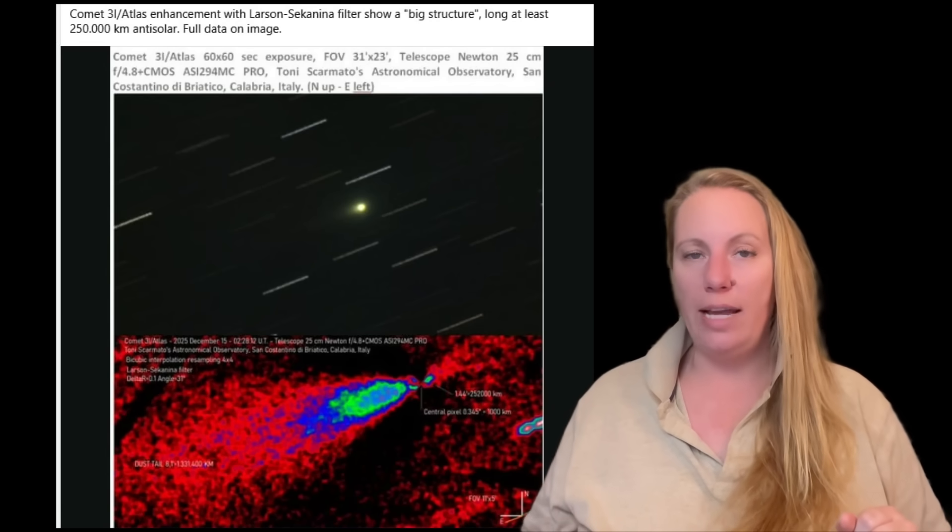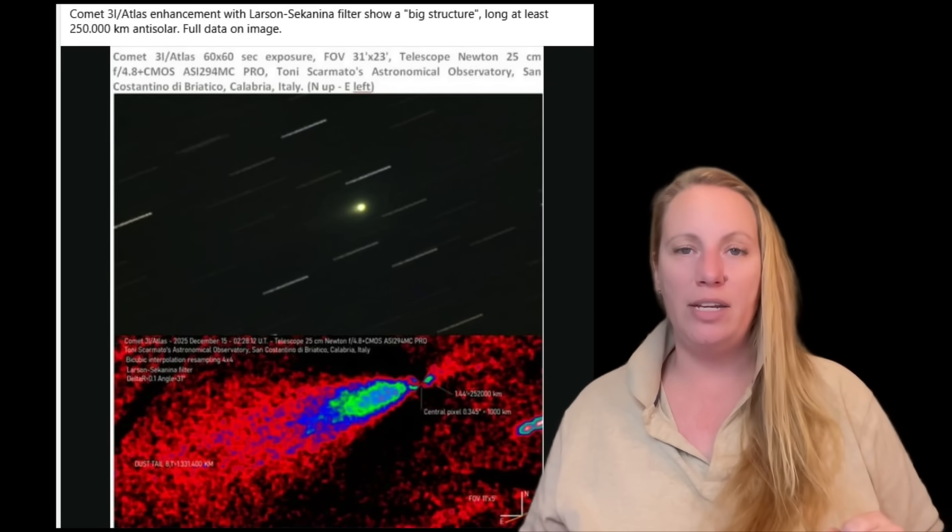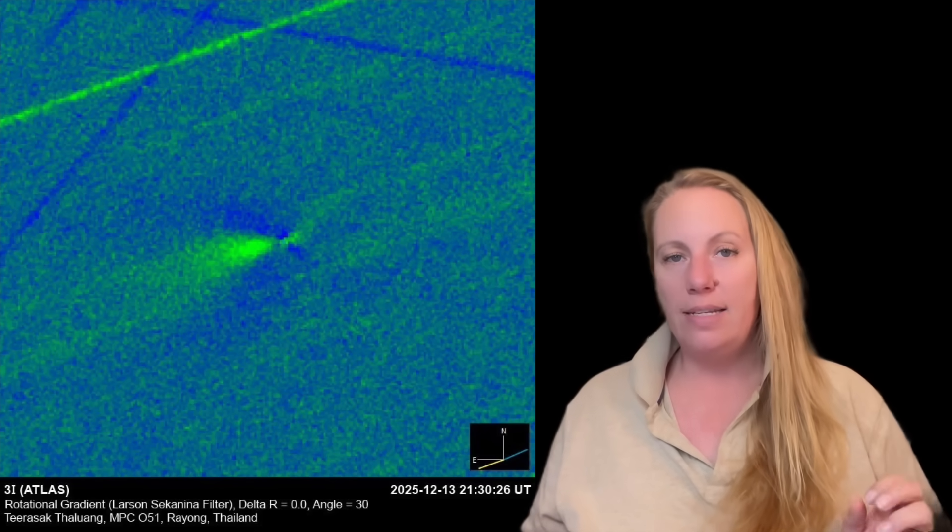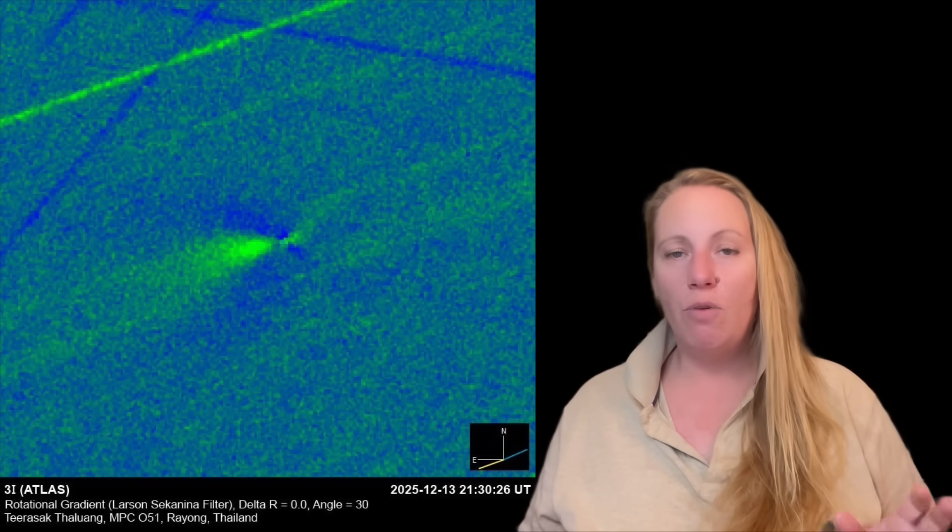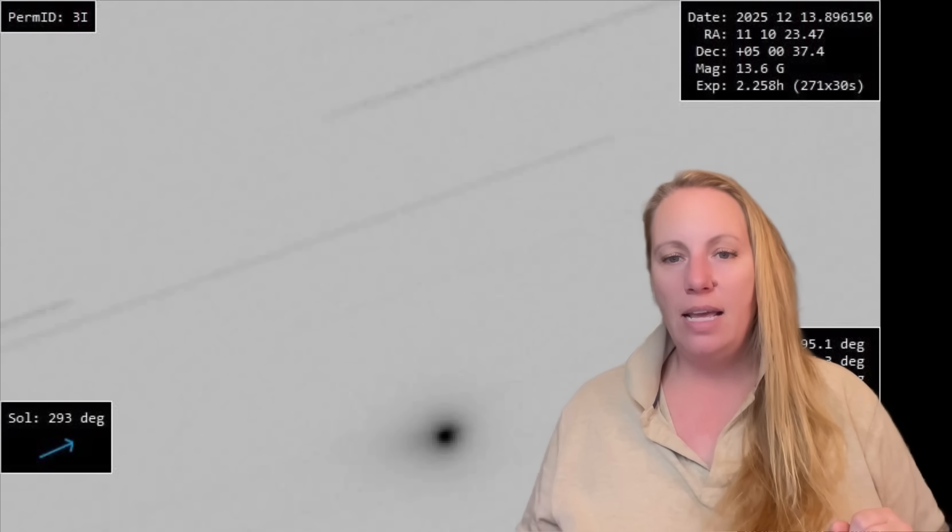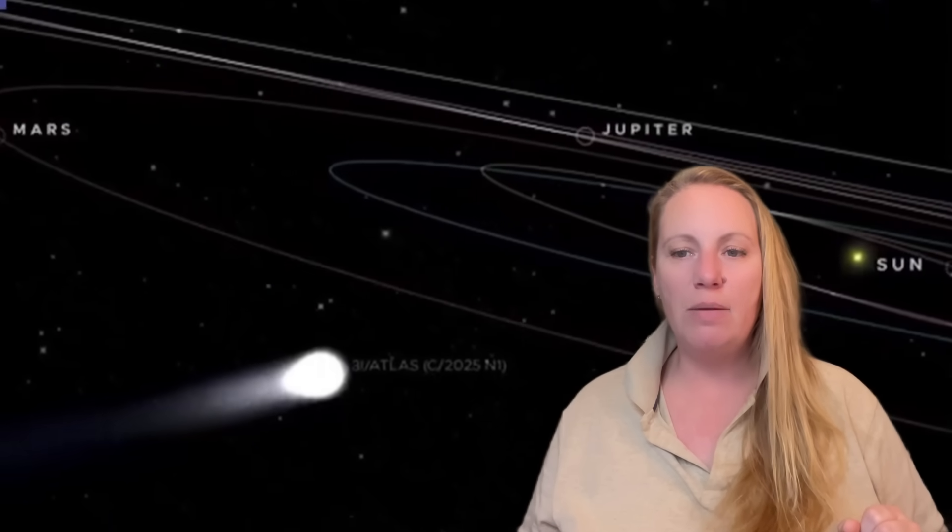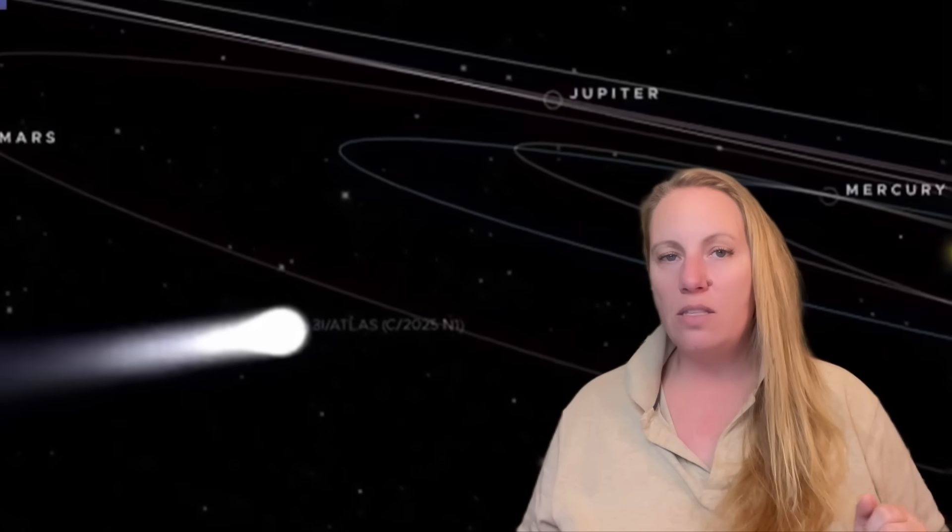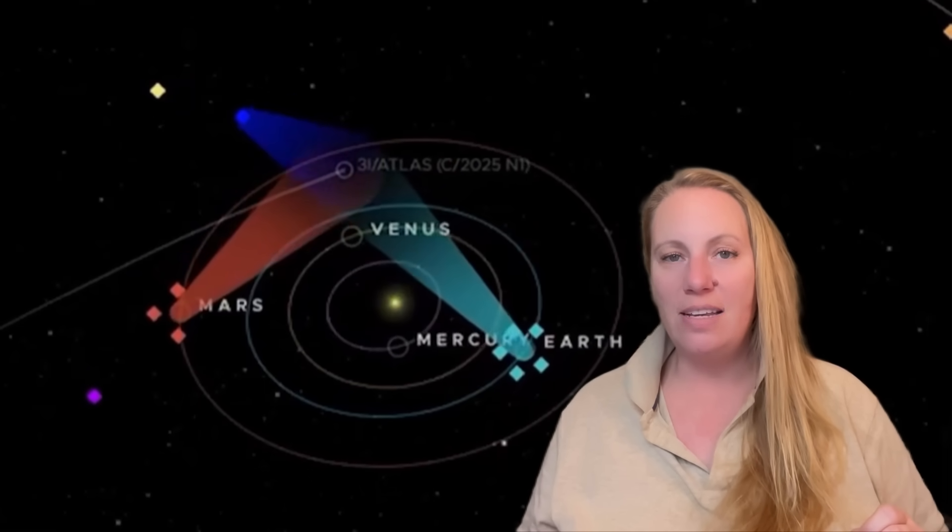Interstellar object, where is the location as of December 15th, 2025? We know December 19th, it will be closest to Earth. Right now, it has a distance of roughly 270 million kilometers from Earth. By December 19th, it will get to a distance a little bit closer of 268.9 million kilometers. That's only 0.4% closer than it is today.